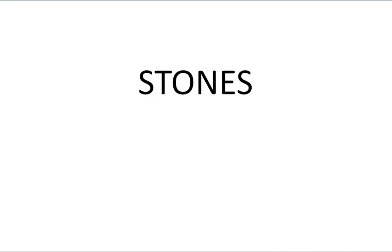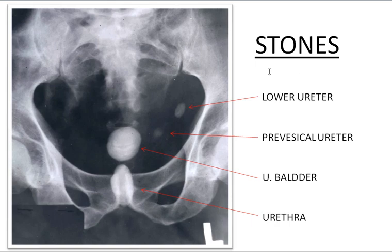One of the most frequent disorders affecting the urological system is stone formation. Stones appear as radio-dense or radio-opaque shadows on a plain film. On a plain film of the pelvic region, an oval radio-dense shadow near the ischial spine is most probably at the pelvic portion of the ureter. A radio-opaque shadow that is slightly medial and towards the bladder may be in the perivesical or terminal part of the ureter, just before entering the trigone.